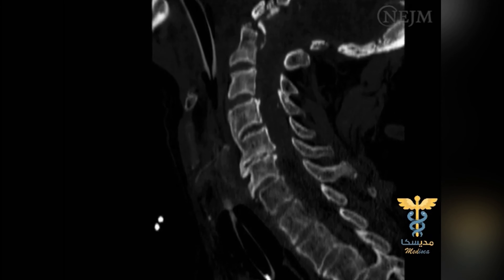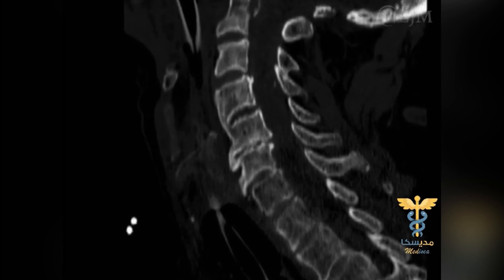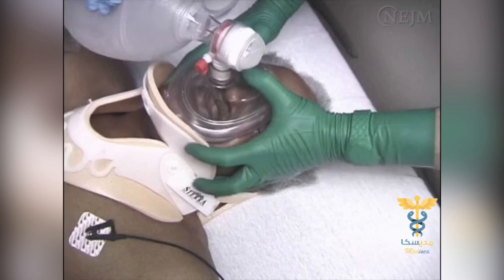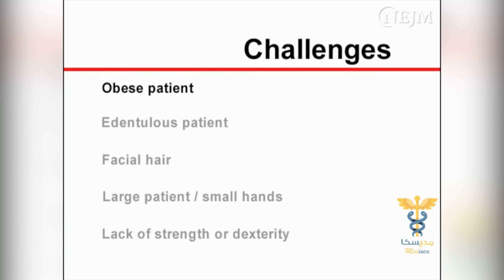The purpose of these reservoirs is to maximize the delivered oxygen concentration. A bag valve device's capability for delivering positive pressure ventilation should be tested before use. This can be achieved by sealing the bag valve device connector with the thumb and squeezing the bag with reasonable force. If it is difficult to compress the bag, or if air is forced between the connector and the thumb, positive pressure can be delivered.